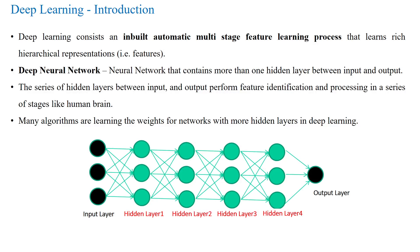Hello everyone. This session is regarding the introduction of deep learning architecture. The deep learning architecture has inbuilt automatic multi-stage feature learning layers which learn rich hierarchical representations of a given input image. These hierarchical representations are called features of given images. The deep learning neural network has more than one hidden layer between the input layer and output layer.